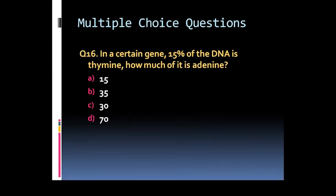Question 16: In a certain gene, 15% of the DNA is thymine. How much of it is adenine? Options are option A: 15%, option B: 35%, option C: 30%, or option D: 70%.